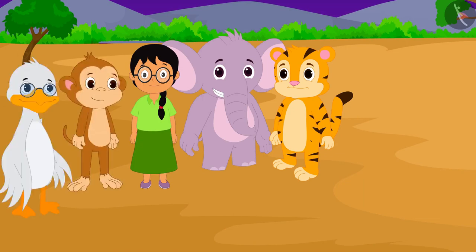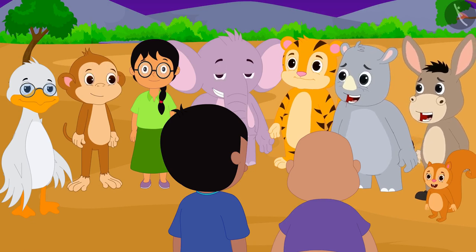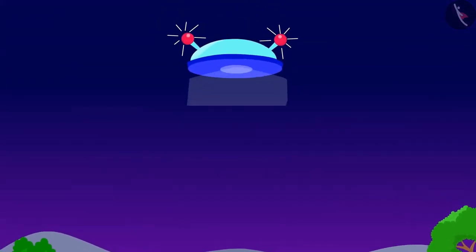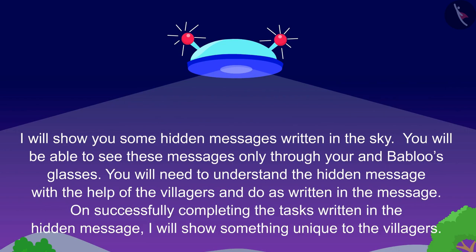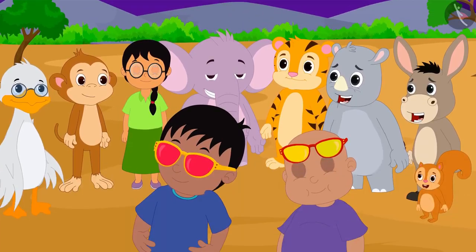Raju and Bablu gathered all the villagers in the playground as per Jeev's letter. Now Raju put on his glasses and looked in the sky towards Jeev's flying saucer. Raju saw this written in the sky: 'I will show you some hidden messages written in the sky. You will be able to see these messages only through your and Bablu's glasses. You will need to understand the hidden message with the help of the villagers and do as written in the message. On successfully completing the task written in the hidden message, I will show something unique to the villagers.' Raju read out this message to all the villagers.